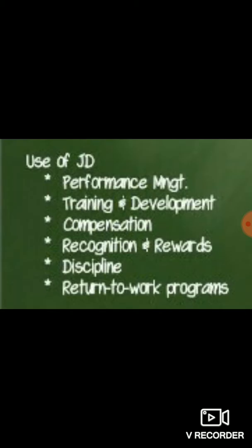At the same time, when we have the real-time performance results at the end of the appraisal period, we check the actual outcomes against what was expected in the JD. The JD clearly defines tasks, duties, responsibilities, and the working conditions under which employees are expected to perform. At the end of the appraisal period, we weigh these two to conduct effective performance management.